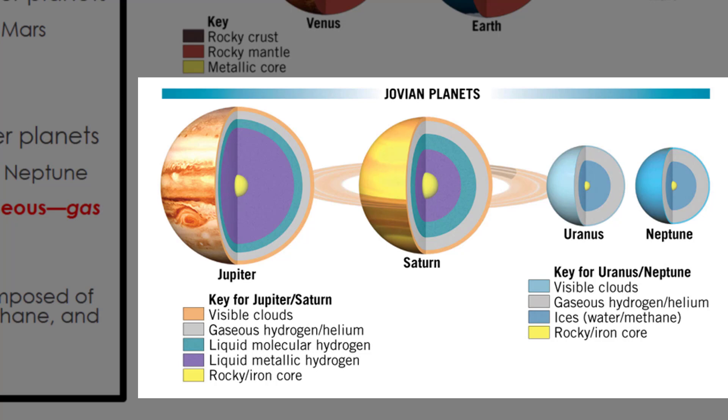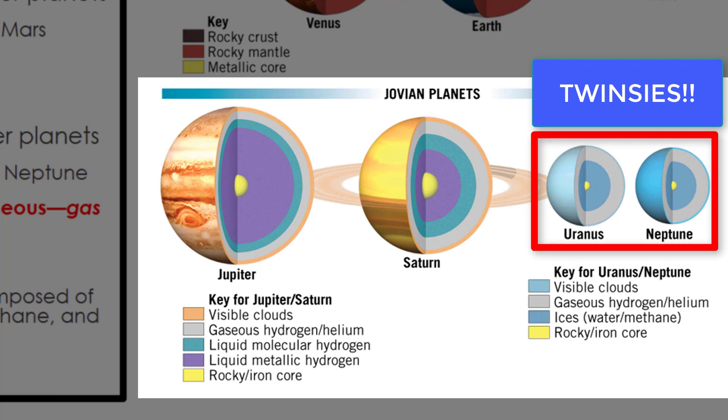For our intents and purposes, Uranus and Neptune can kind of be thought of as twins. And as shown in this image, they have very similar interiors. Both have a relatively small rocky iron core, and just outside of that core, there's a region of water and methane ices. And as we continue to work our way outward from their centers, you see a gaseous hydrogen and helium layer, and then a visible cloud layer.